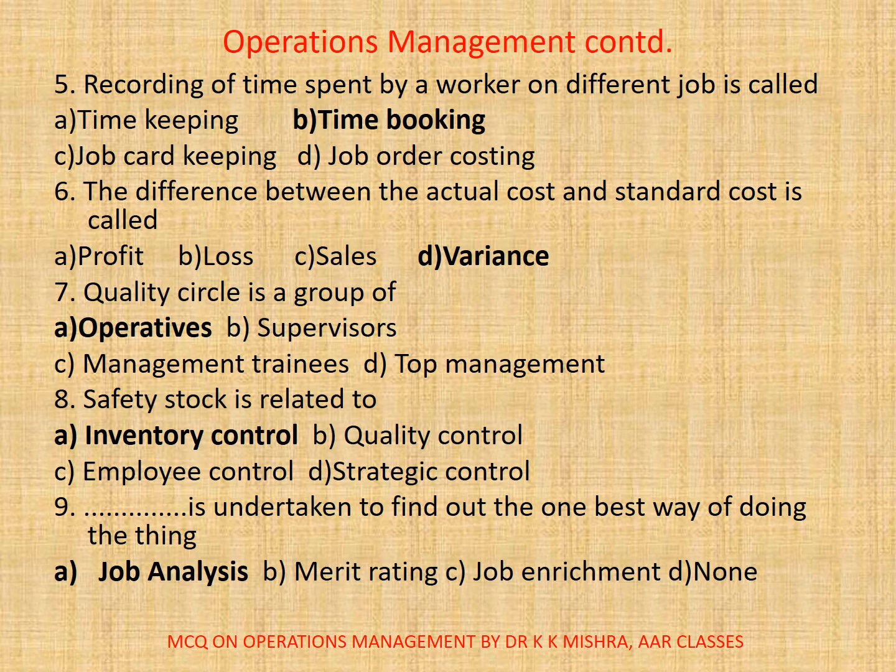6. The difference between the actual cost and standard cost is called A. Profit. B. Loss. C. Sales. D. Variance. The correct option is D. Variance.